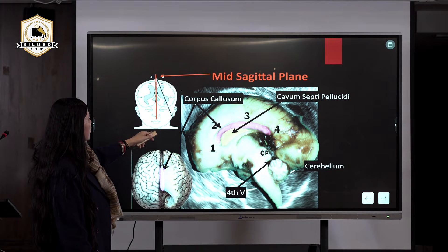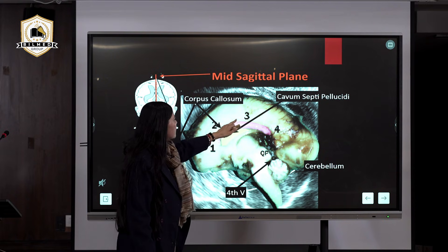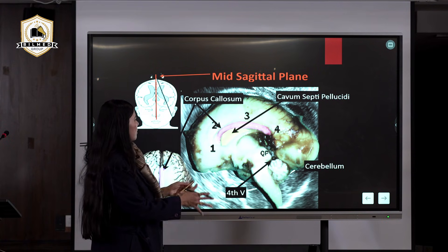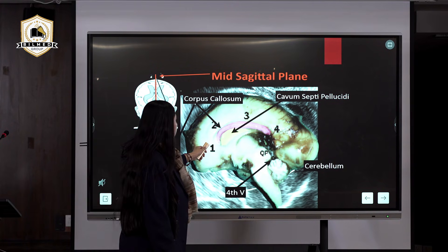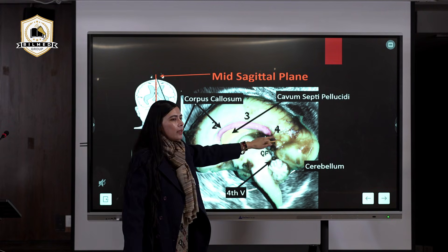If you are knowing anatomy nicely, nothing is difficult for you. This is corpus callosum. Can you see the connecting point of the two cerebral hemispheres? These are the four parts that we discussed: rostrum, genu, body, splenium.